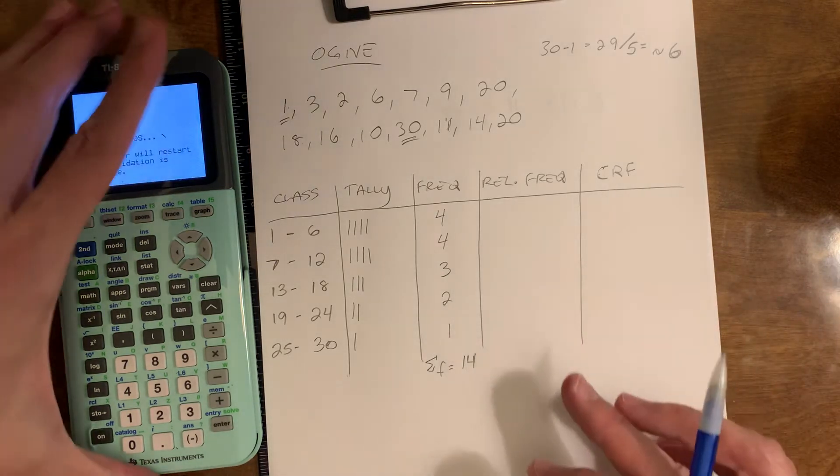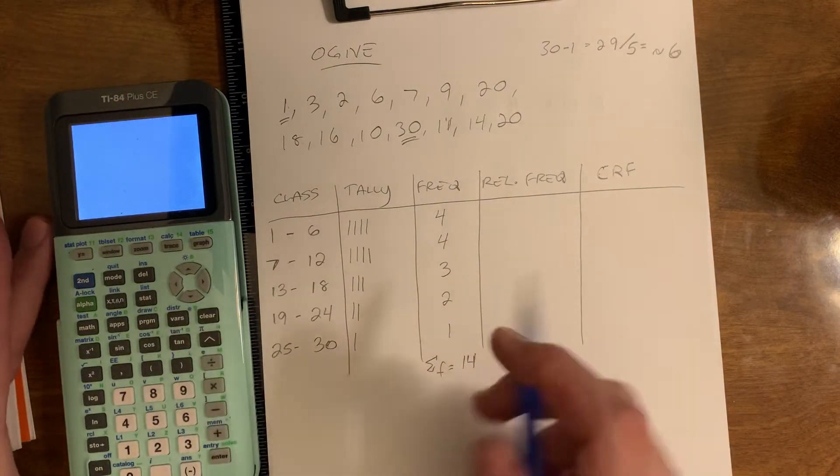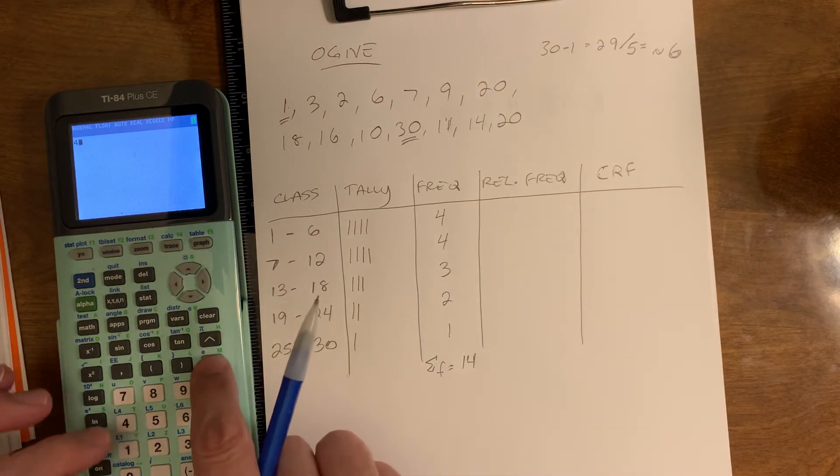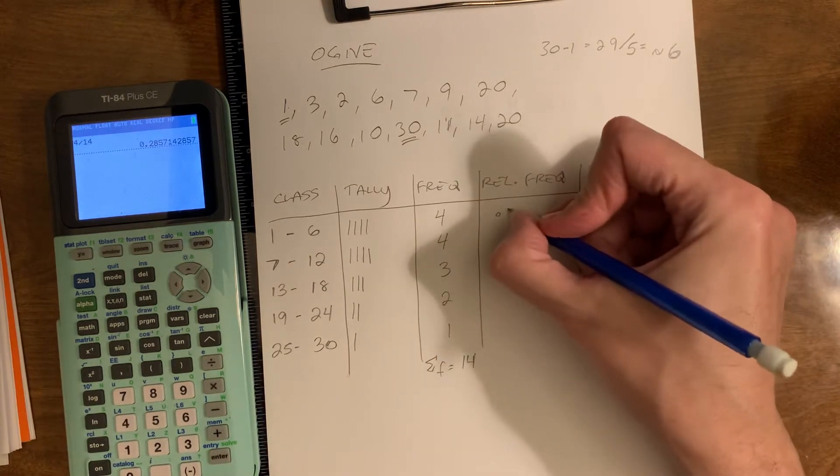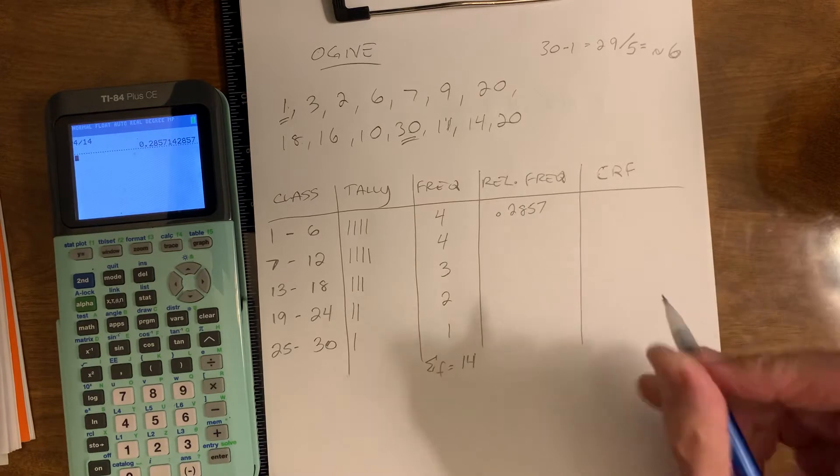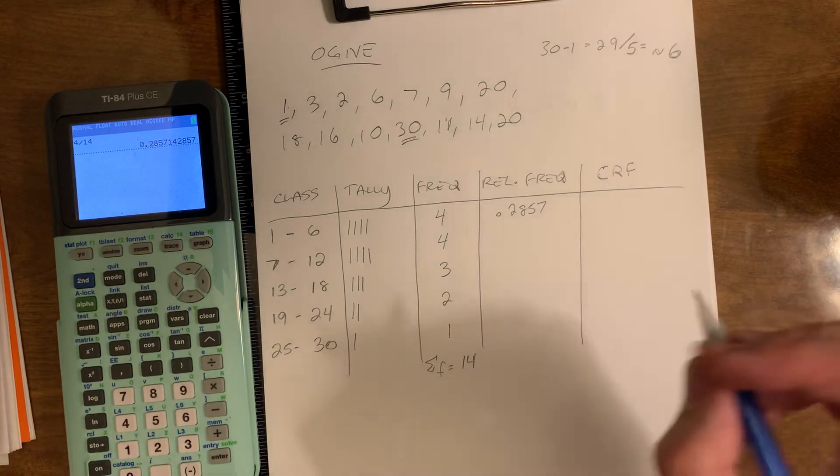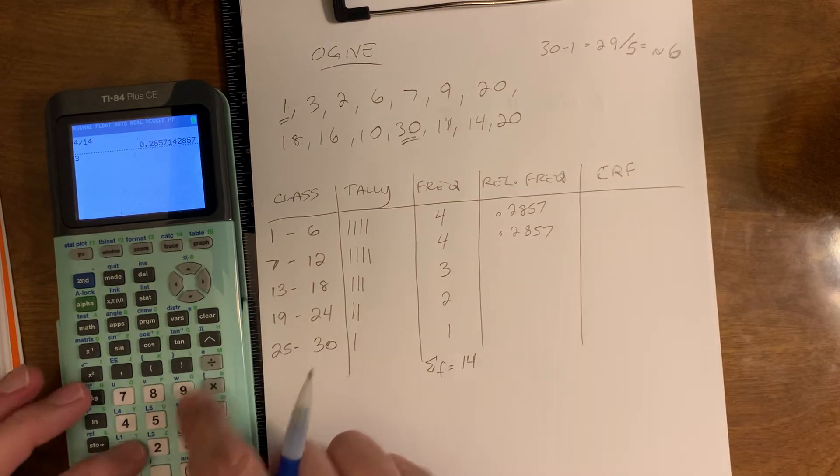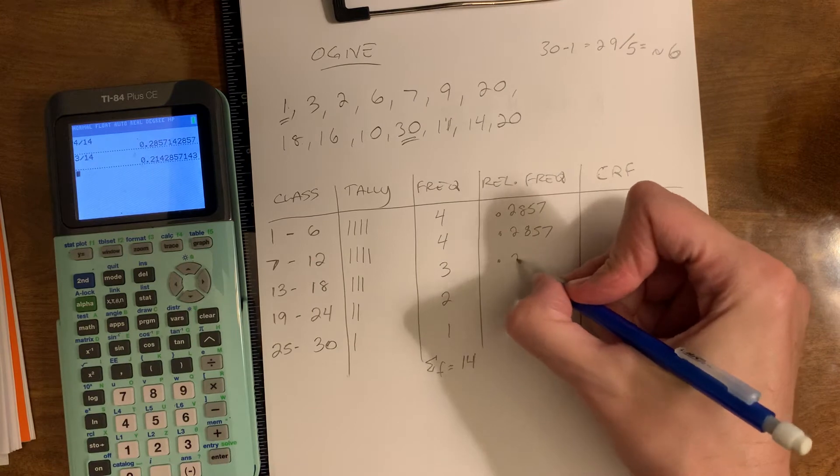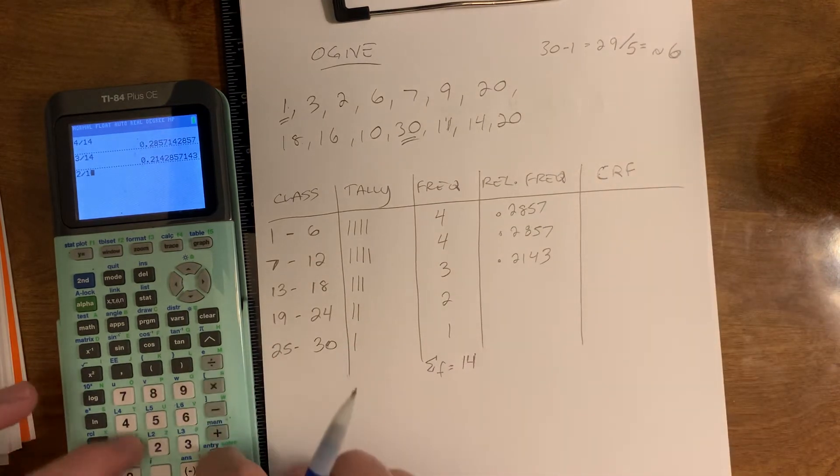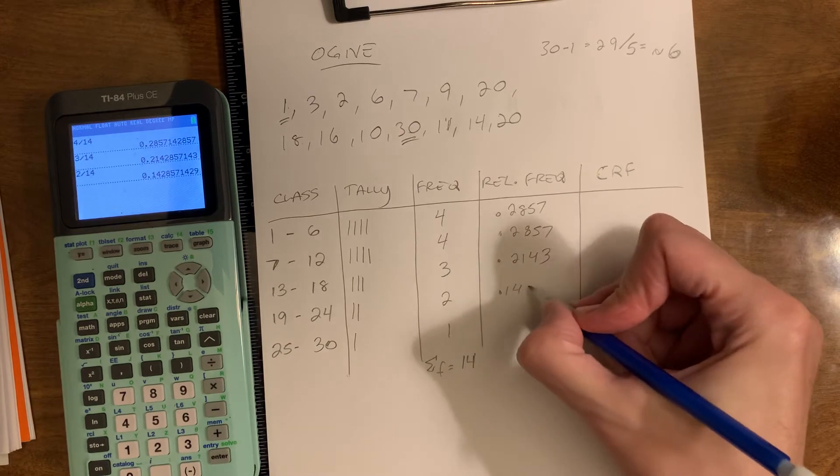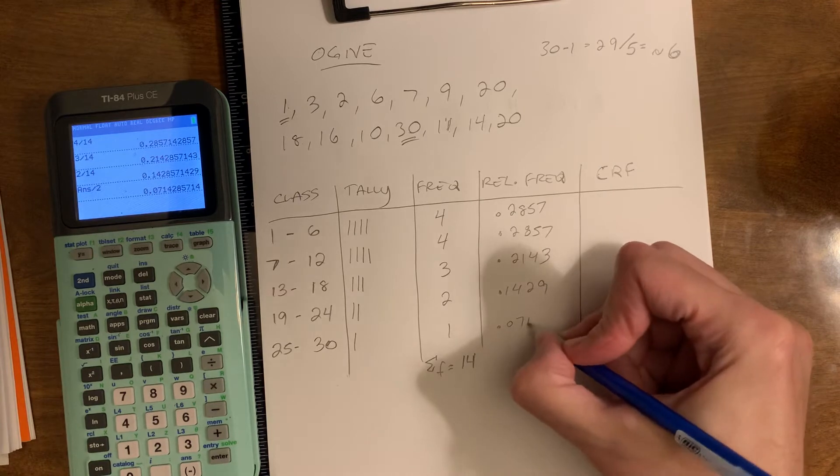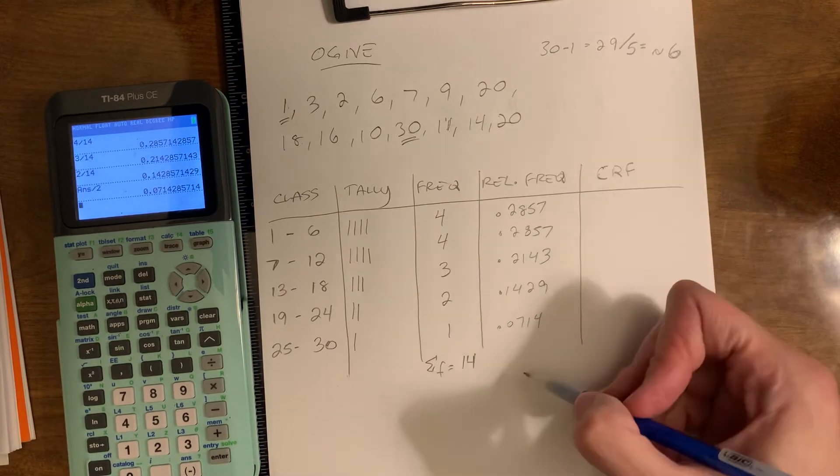Relative frequency is just what it was before. Nothing has changed. So we're going to divide the frequency by the total values in the distribution. 4 divided by 14 is 0.2857. Go to four decimals, please, each time. And we have another one, so 0.2857. 3 divided by 14, 0.2143. 2 divided by 14, 0.1429. And half of that for one is 0.0714.